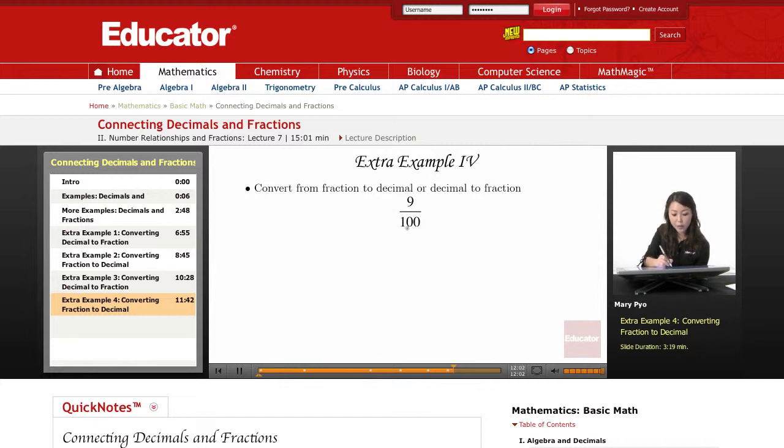So if I have 100 parts to make a dollar, what do I have? I have the penny, because 100 pennies equals $1. So I know that I have 9 of them. 9 out of 100 would be the same thing as having 9 pennies.